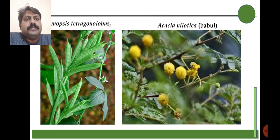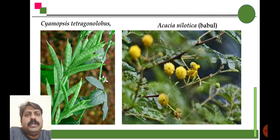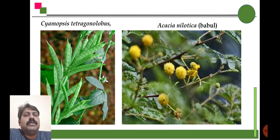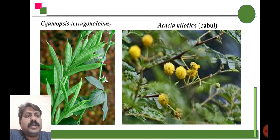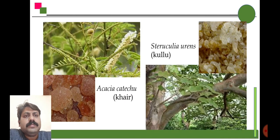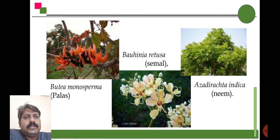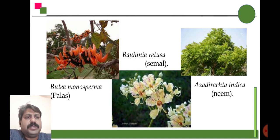Sources of gum include Cyamopsis tetragonoloba — Gawar — which is a source of gum, then Acacia nilotica — that is Babool — Acacia catechu — that is Kher in Marathi — and Acacia indica. These are some of the sources of gum.